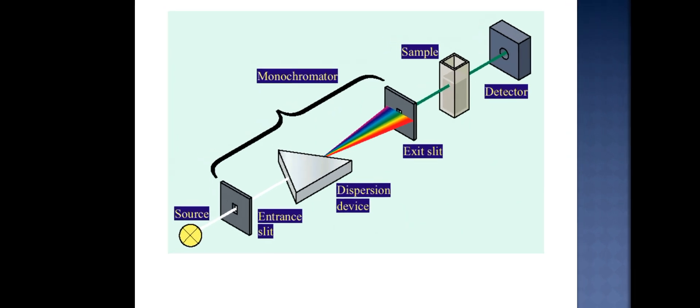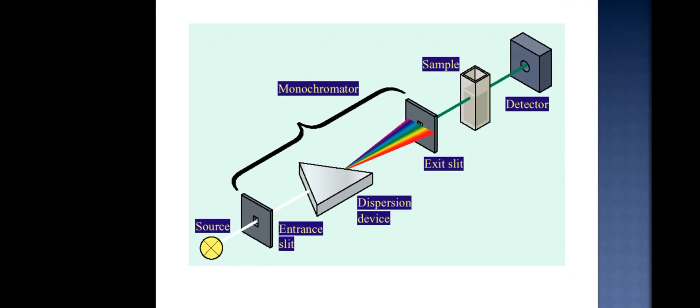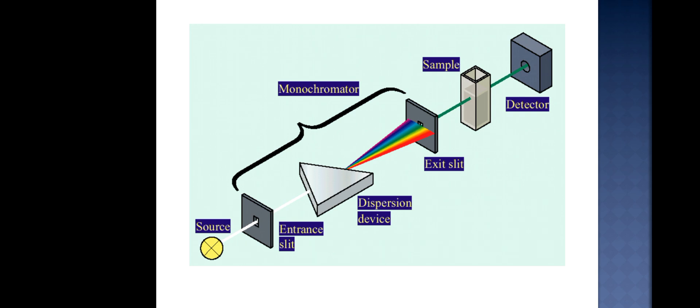This is the basic diagram for the ultraviolet spectrophotometer which consists of a source from which the ultraviolet light is passed. It is then passed through the monochromator, whose function is to convert the polychromatic light into monochromatic light. Then the single beam of light is passed through the sample and detected in the detector.